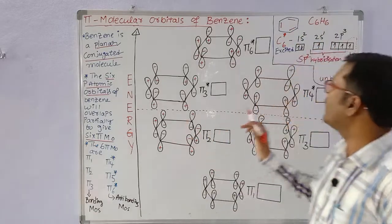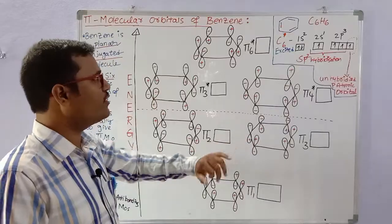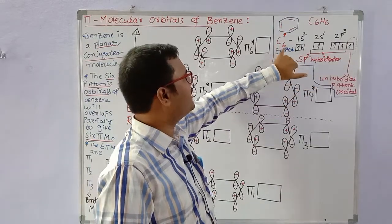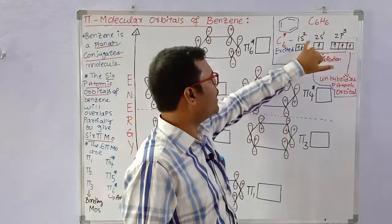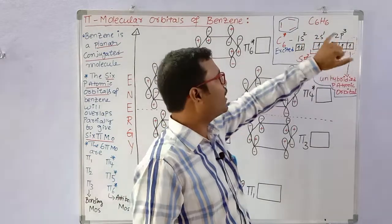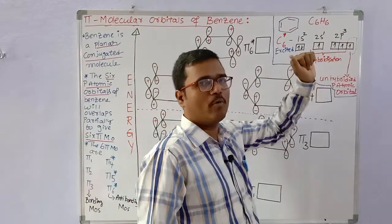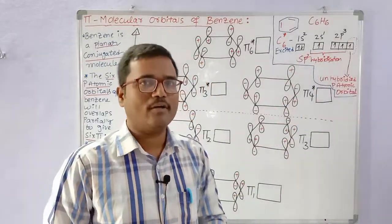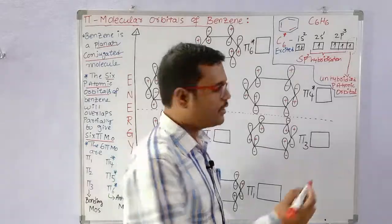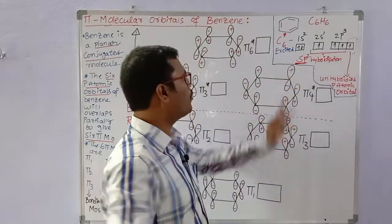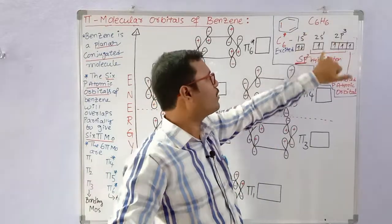All 6 carbon atoms, during the formation of the pi bonds, undergo sp2 hybridization. The excited electron configuration of carbon is 1s2, 2s1, 2p3 — compared to the ground state 1s2, 2s2, 2p2. One s orbital electron is promoted to a p orbital. The 1s, 2s, and two 2p orbitals are involved in sp2 hybridization.